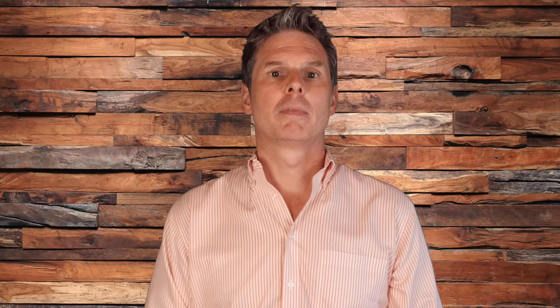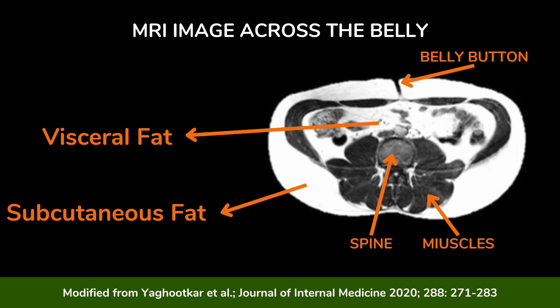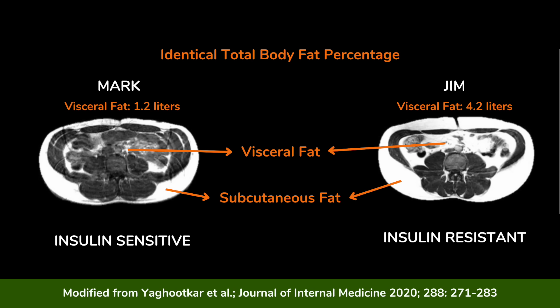Number one: visceral and ectopic fat. There is a lot of evidence linking insulin resistance to the accumulation of visceral fat and ectopic fat. Visceral fat is also called intra-abdominal fat and consists of several fat depots inside the abdominal cavity surrounding the inner organs. Ectopic fat is fat deposited inside muscles and inner organs not designed to store fat, such as the liver. Even two men with identical total body fat percentage can differ dramatically — one with high visceral fat is expected to be much more insulin resistant than one with little.